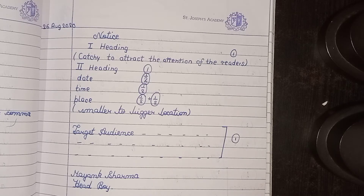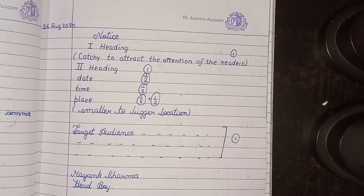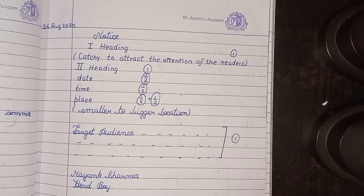The next line is the time — for example, from 10 AM to 12 noon. In the next line comes the place. You have to write from smaller to bigger location — for example, 'At the auditorium in [your school name].' You have to write the smaller location first, then the bigger location.